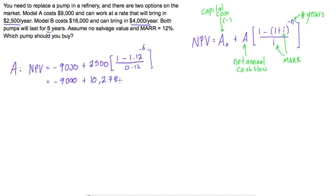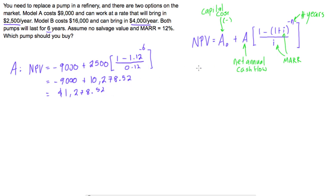Adding the two terms together, the net present value for pump A is positive $1,278.52. This is a positive value, which means you can tentatively accept this project because you're going to make at least your minimum rate of return. If you need a refresher on that, visit www.engineerforfree.com or find the engineering economics playlist on the YouTube channel.